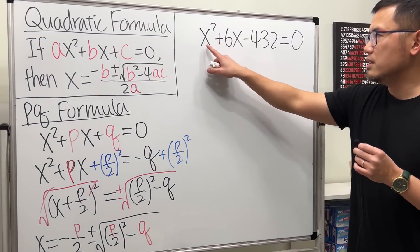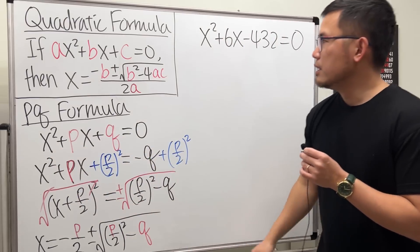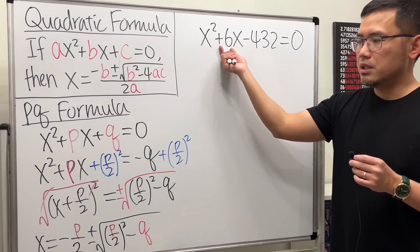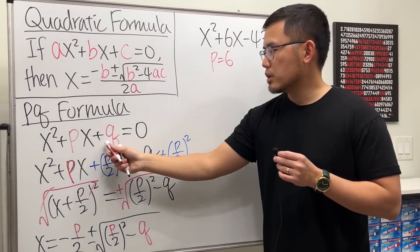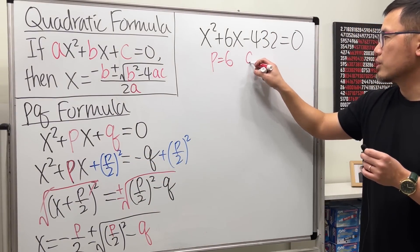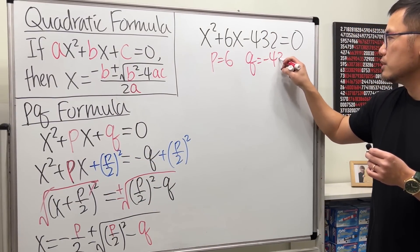So, right here, as we can see, we have the x squared. So, that means the P will just be equal to 6. So, P equals 6. Likewise, Q is just that. So, Q equals negative 432.